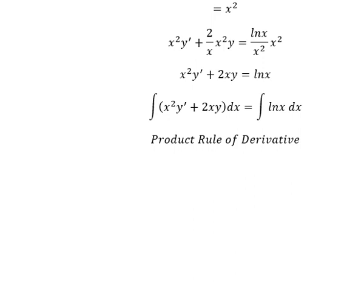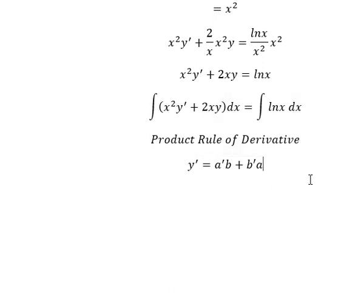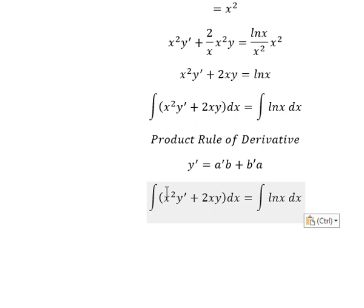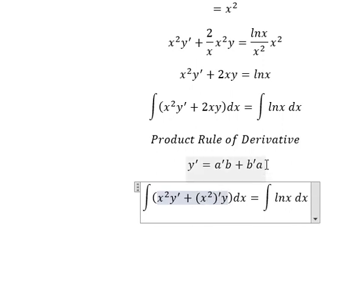Next we need to use the product rule of the derivative. So we have: first derivative of y equals the first derivative of A multiplied by B, plus the first derivative of B multiplied by A.